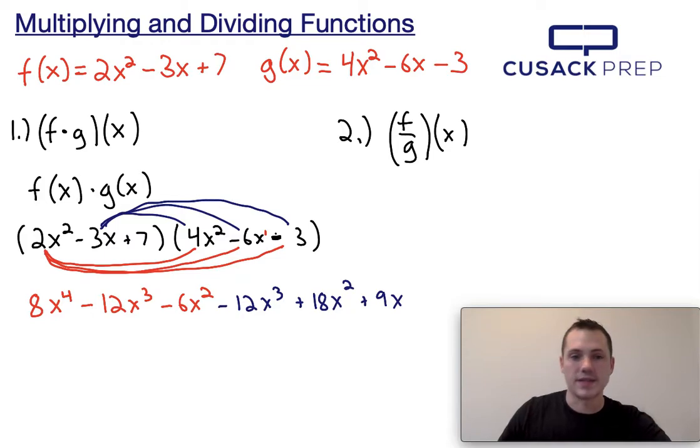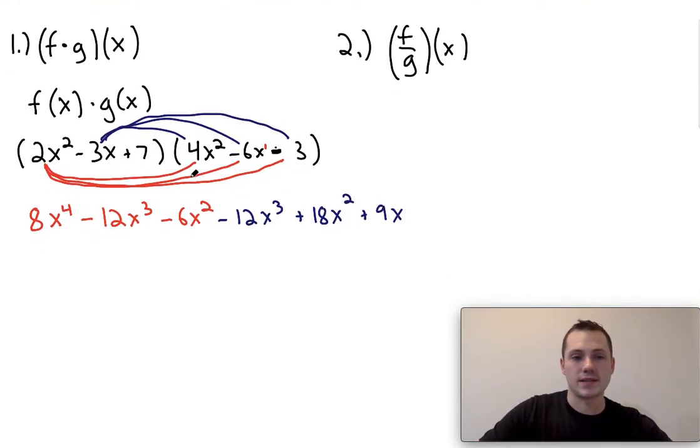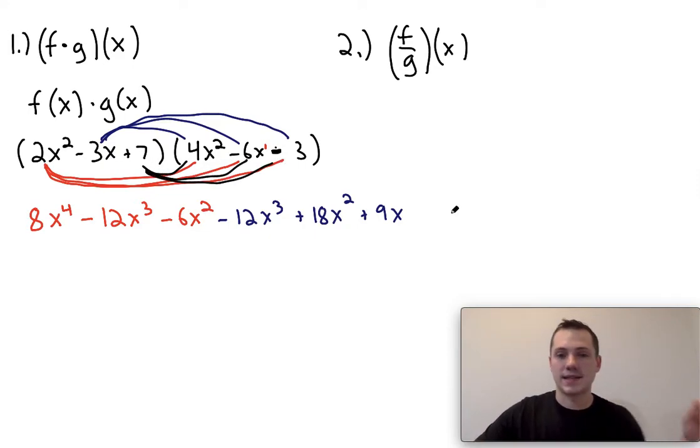And then I can go ahead and do this for the last number, which is plus 7. So plus 7 times 4x times negative 6x times negative 3x. I think you probably get the idea. So 7 times 4 is going to be 28x squared. 7 times negative 6 is going to be negative 42x, and 7 times negative 3 is going to be minus 21.